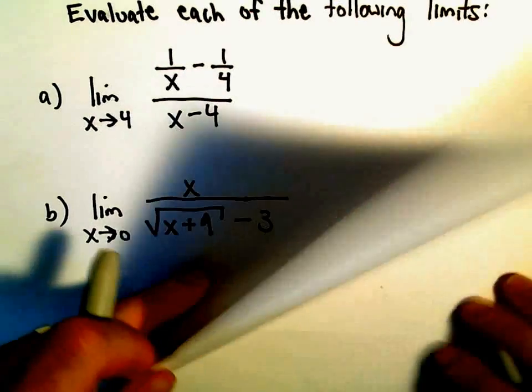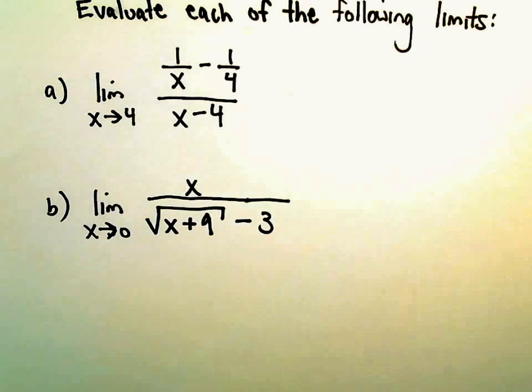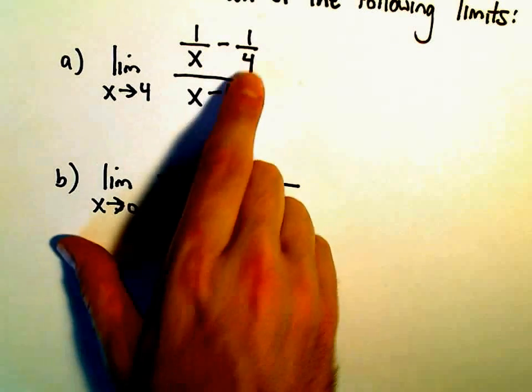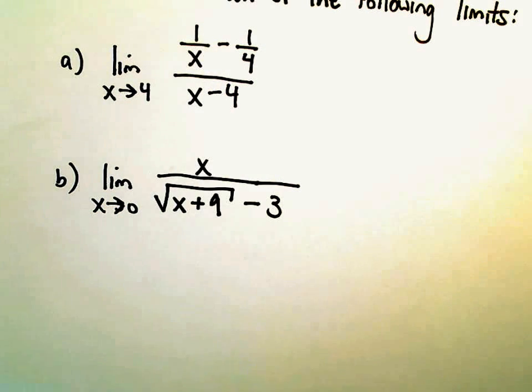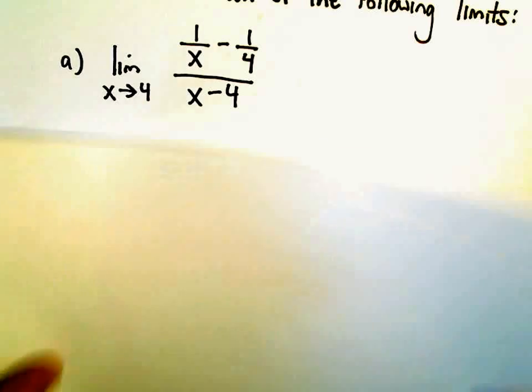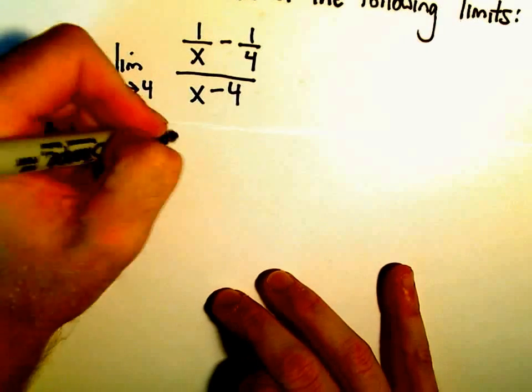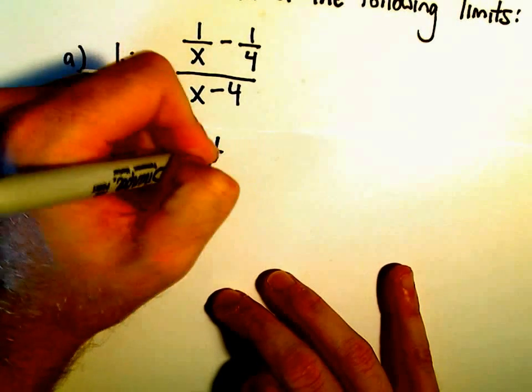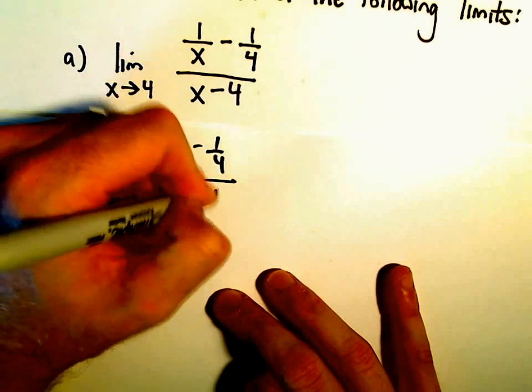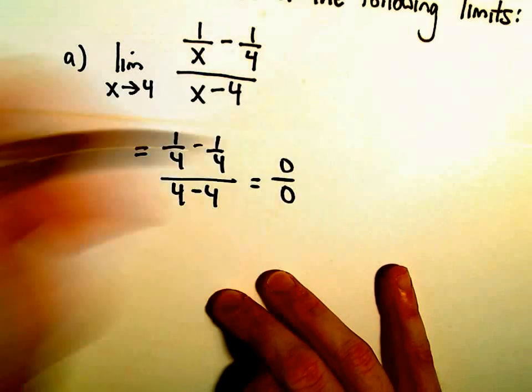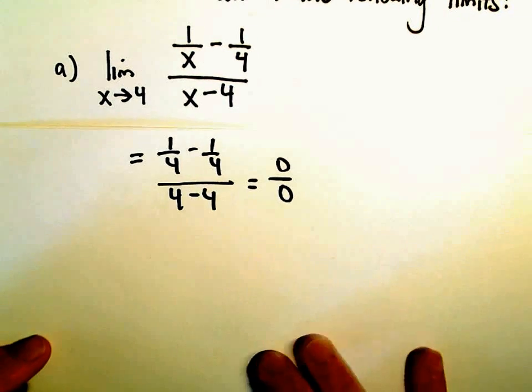The first thing we're going to try to do is just what we did before, which is just plug things in. But if you look in the very first one, if you plug in x equals 4, notice you're going to get 1 fourth minus 1 fourth, which would be 0 in the numerator. So we would get 1 fourth minus 1 fourth all over 4 minus 4, which would be 0 over 0, or an indeterminate form.